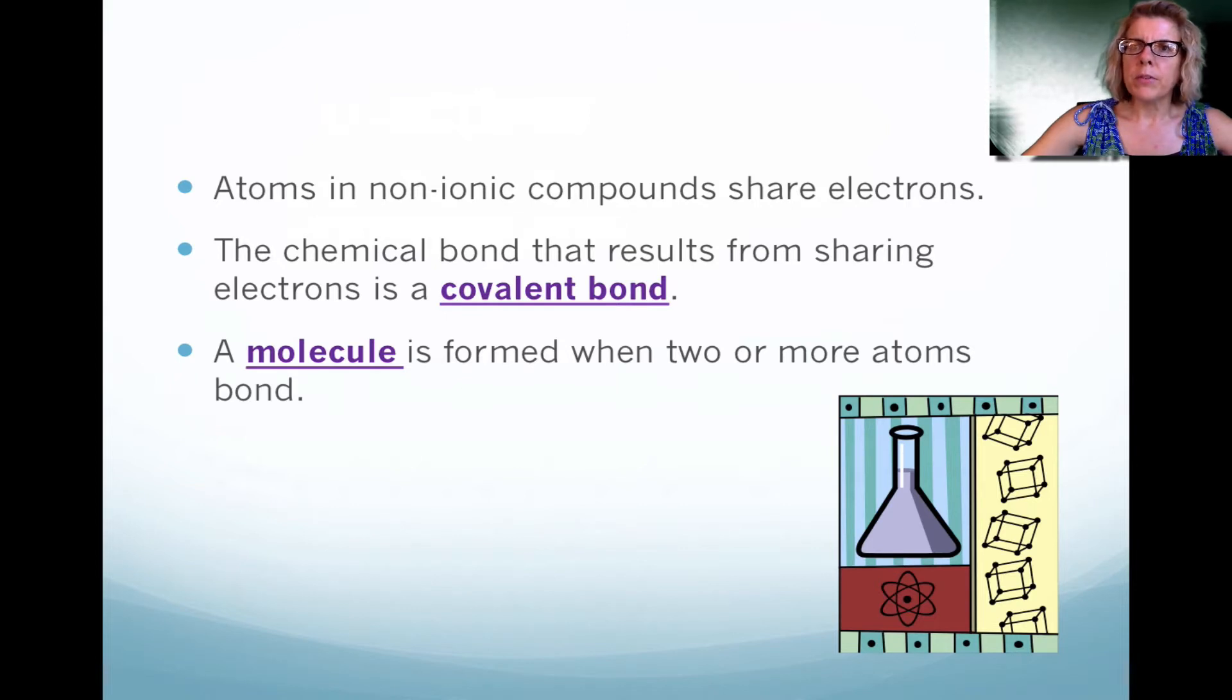In the previous chapter, we were looking at ionic compounds. Now we're looking at non-ionic compounds. These are atoms where the electrons share electrons, so they're not transferring electrons. They're together, holding on to the electrons together. As a result, we call this a covalent bond, and we also use the term molecule when two or more atoms together form a covalent bond.